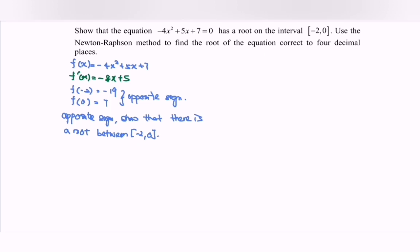So continue by using the Newton-Raphson method. So let's say we have the initial value which is equal to -1, because it's in the middle or in between -2 and 0.